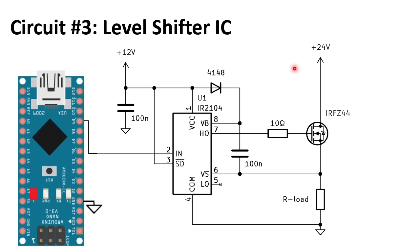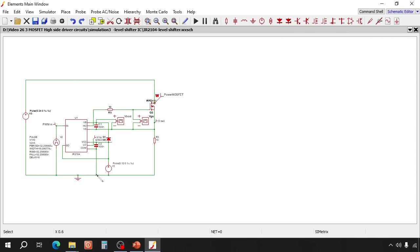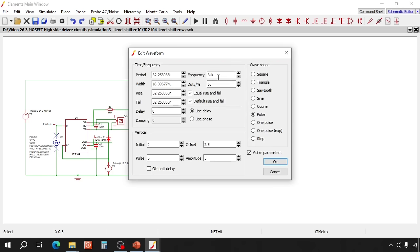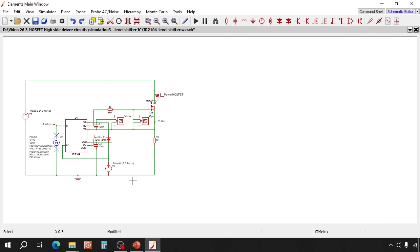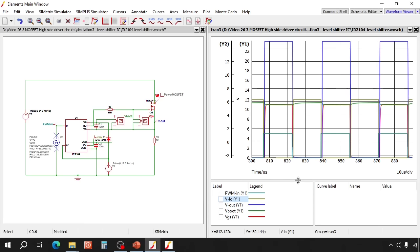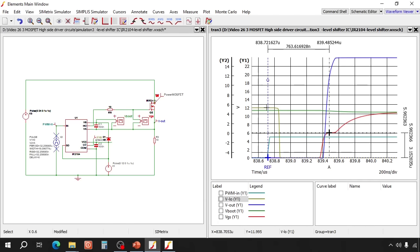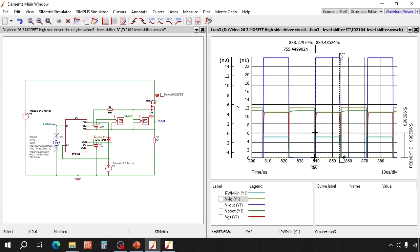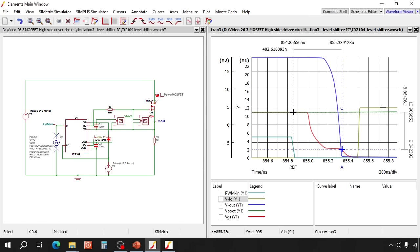Let's simulate this circuit to see how it works. This is the circuit in the simulator. Again we have 31 kilohertz 50%. We have a 12 volt power supply here. And here is the level shifter IC. Let's check the switching speed. Switch on delay is about 750 nanoseconds. Let's check the switch off. And the switch off delay is about 480 nanoseconds. Now that seems much slower than the previous circuit. But there is a reason for that.